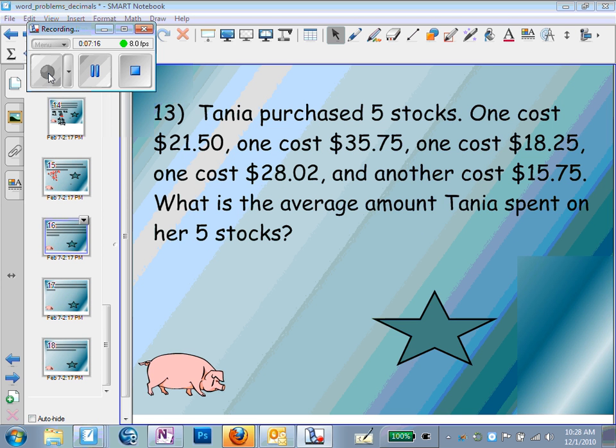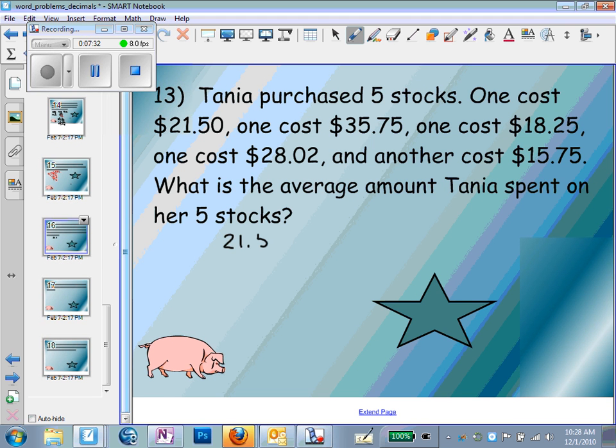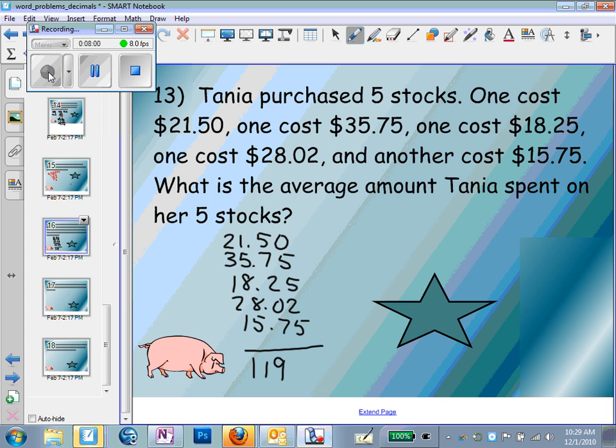Tania purchased five stocks. Here we have the price for all five stocks. We're asked to find the average. The average is where we add up all the numbers and divide by how many numbers. So we're going to add up $21.50 plus $35.75 plus $18.25 plus $28.02 plus $15.75. Notice I'm lining up my decimals and place values because we're adding or subtracting numbers. When I add all these together, I get $119.27.